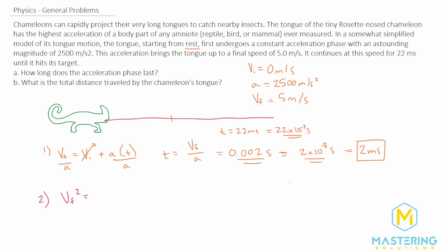We have v final squared equals v initial squared plus two times the acceleration times delta x. The initial velocity is zero, so v final squared equals 2a times delta x. We're trying to solve for delta x, so let's divide both sides by 2a. Delta x equals the final velocity squared divided by 2 times the acceleration.